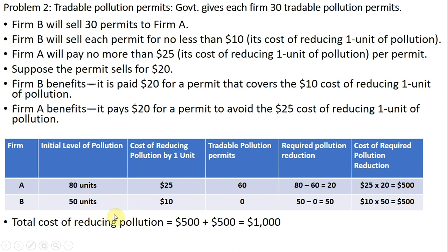Looking at our table: Firm A will have all 60 permits. It's currently producing 80 units of pollution, so it has to reduce pollution by 20 units — its cost is now $500. Firm B has no permits, so it has to reduce all 50 units at a cost of $500. The total cost of reducing pollution in this scenario is $1,000, which is less than our first scenario.